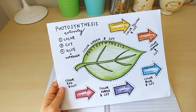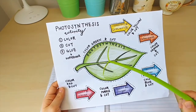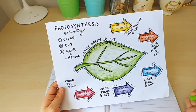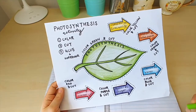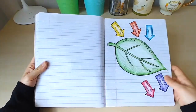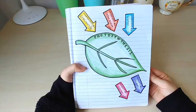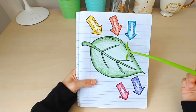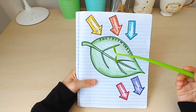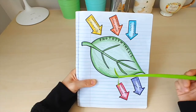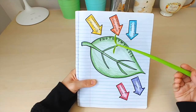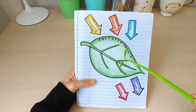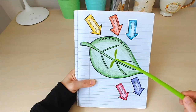Now that you have finished cutting out the pieces in our photosynthesis activity page, it's time to build our model. Start off by gluing the leaf that says 'photosynthesis' on it in the middle of the page. The reason we're placing it in the middle is because this is the main process we are representing today.